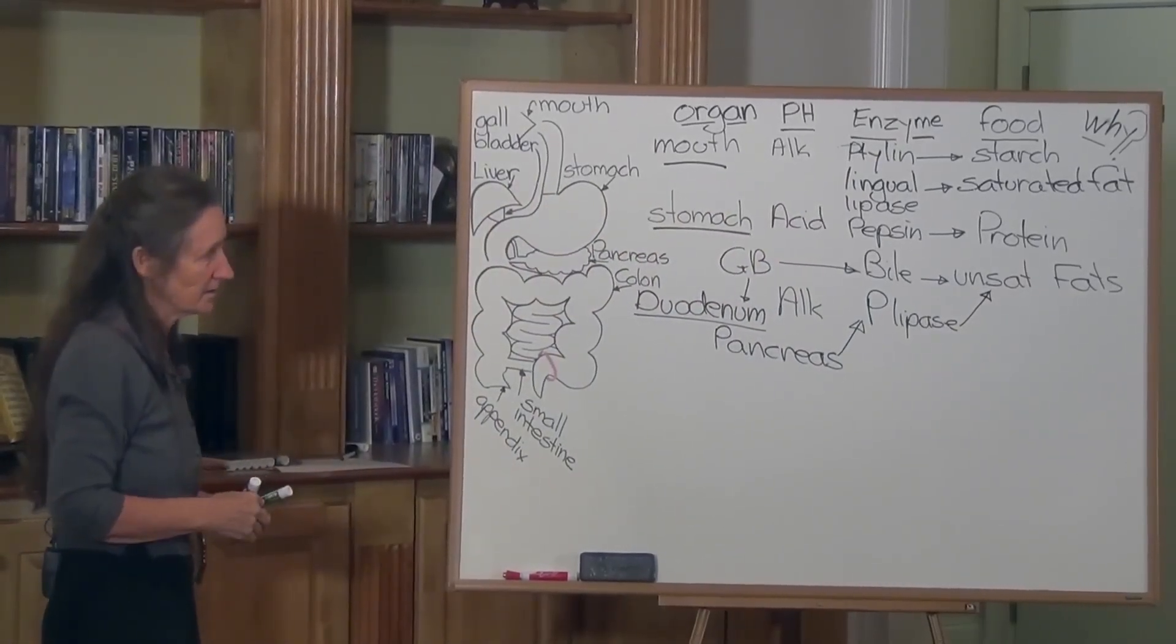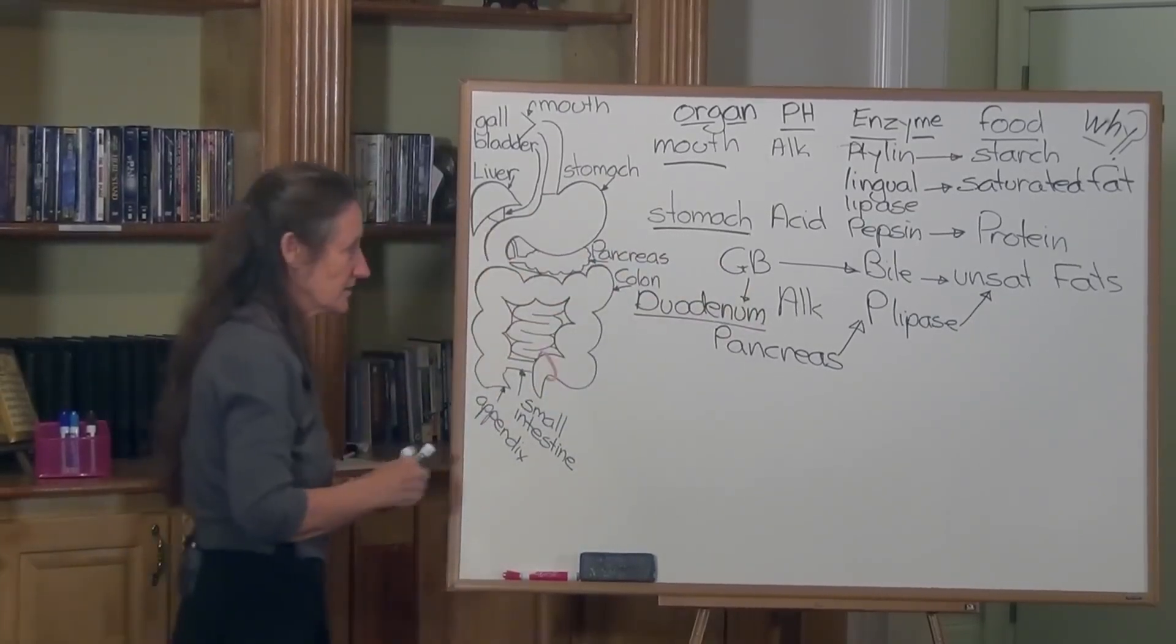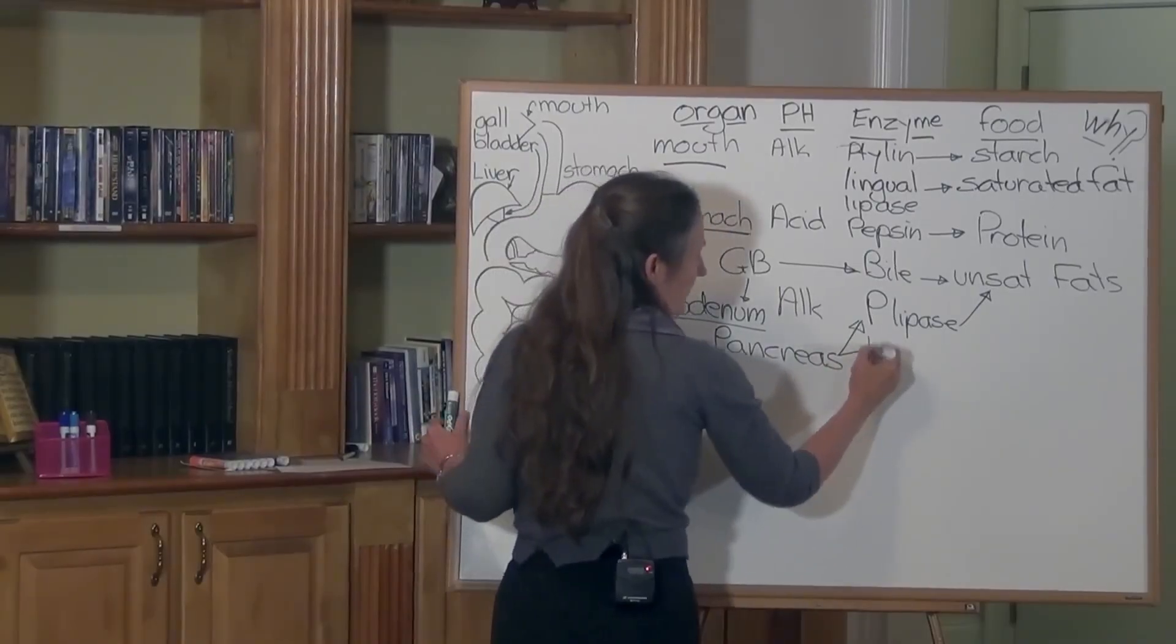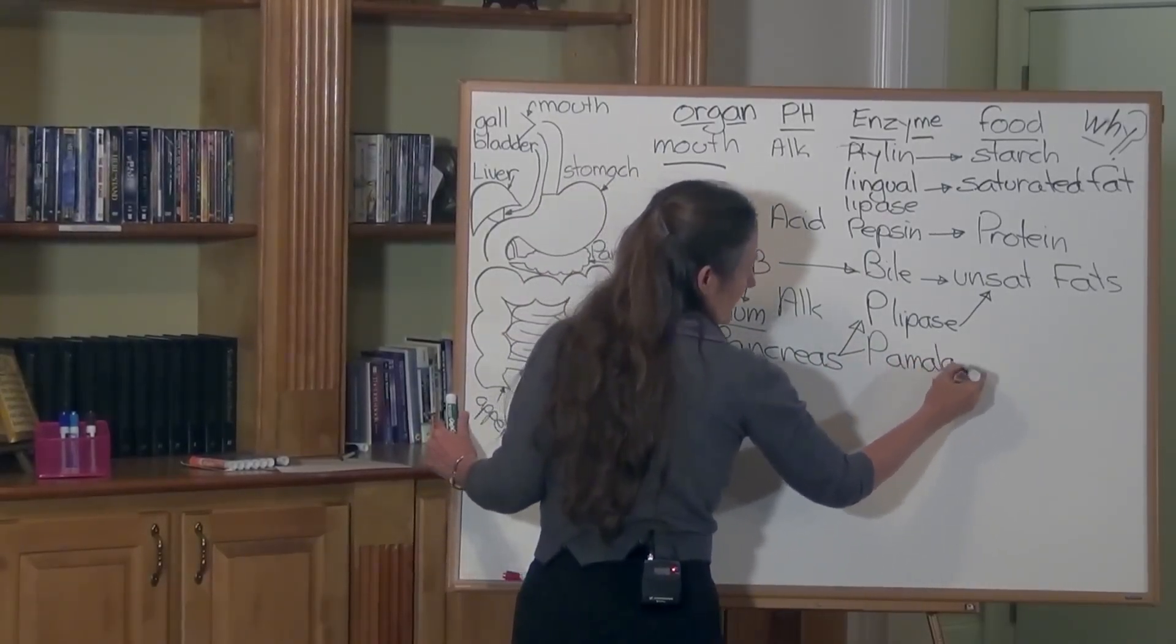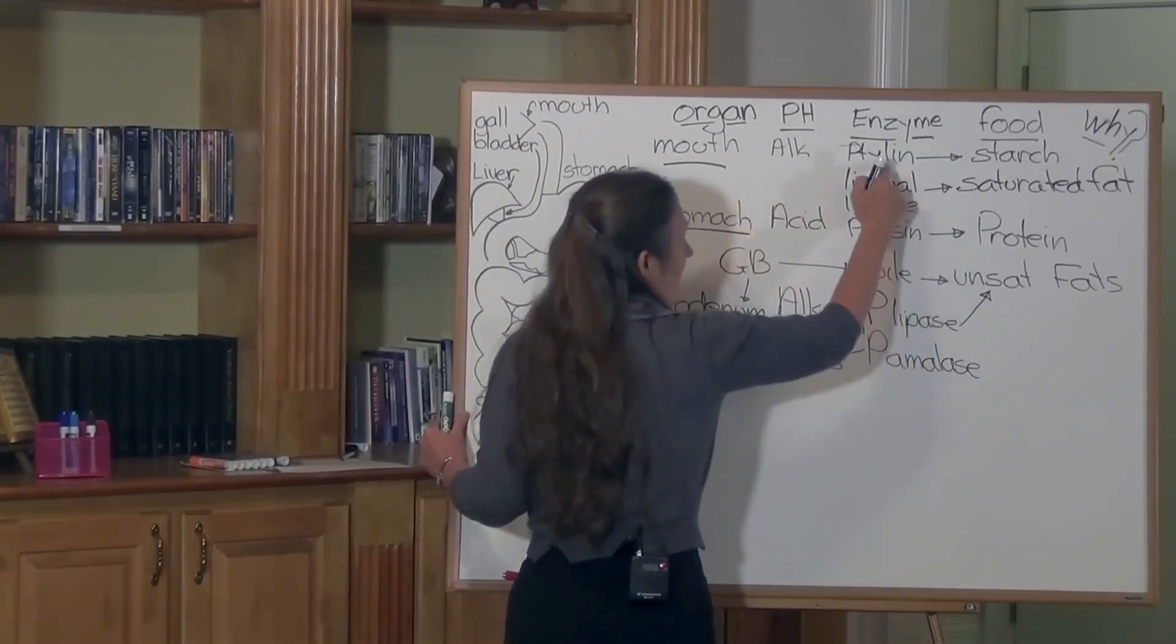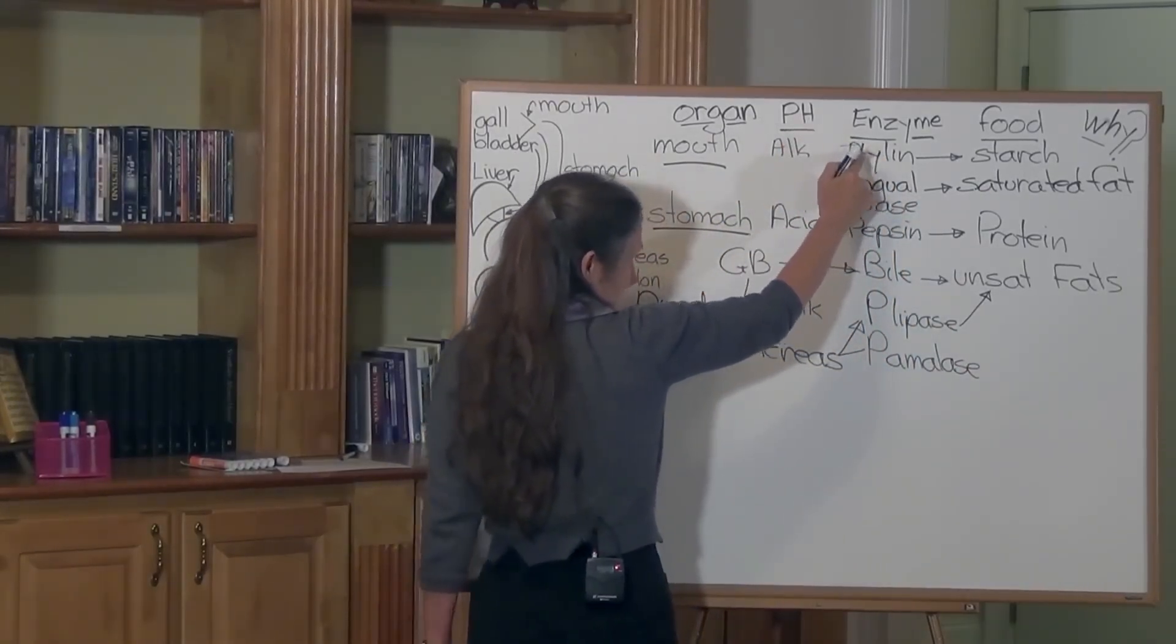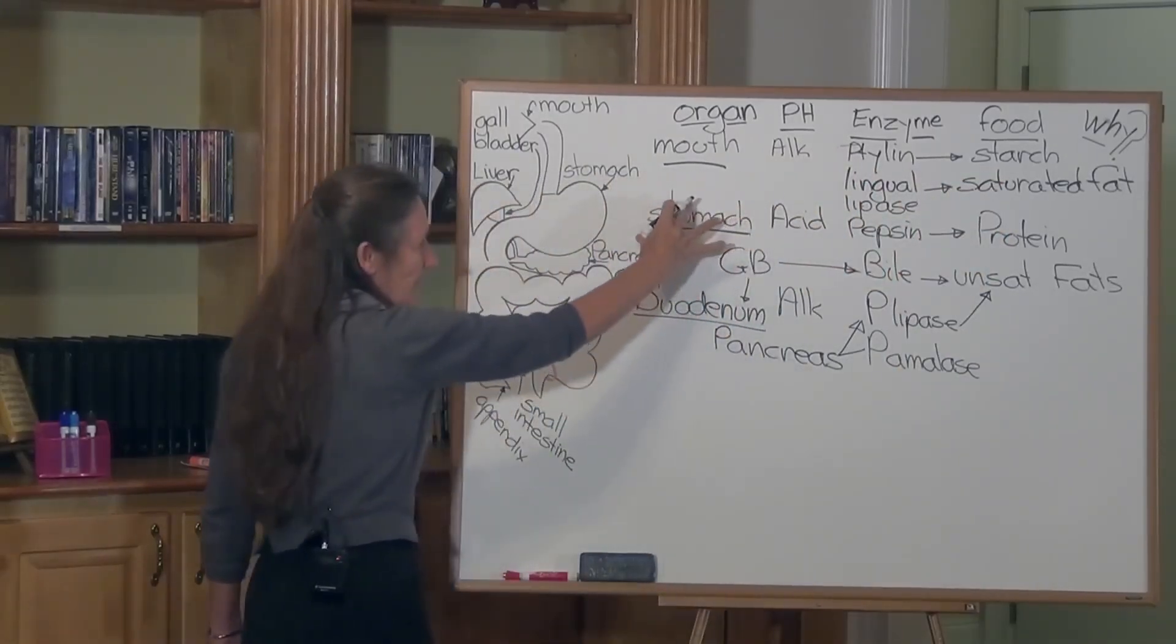The pancreas also releases pancreatic amylase. Remember, ptyalin is a salivary amylase, so the salivary amylase ptyalin starts the digestion, put on hold in the stomach, comes to the duodenum and pancreatic amylase finalizes the starch digestion.